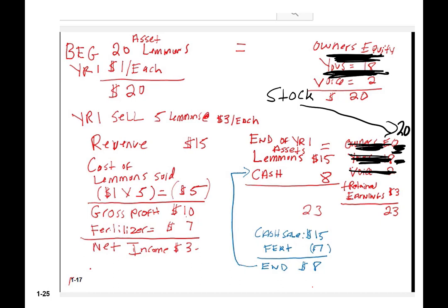Does the balance sheet balance? $20 of assets equals $20 of owner's equity — $20 of stock. That means there's somebody out there who owns this corporation, and right now they own $20 worth of lemons.